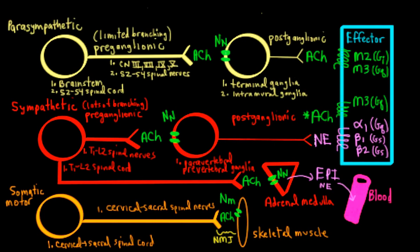The axons of the postganglionic sympathetic neurons, when they fire action potentials, primarily release norepinephrine at their nerve terminals, which binds to adrenergic receptors — G-protein-coupled receptors. The three primary receptors to consider are alpha-1, coupled to Gq; beta-1, coupled to Gs; and beta-2, coupled to Gs as well. There is also some alpha-2 and beta-3 on effector organs, but we'll focus on these three as the major receptor subtypes found on effector organs.